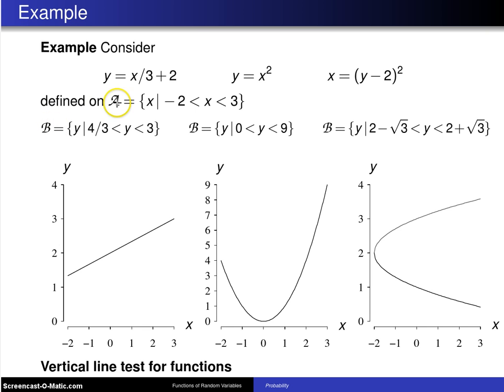The next thing to figure out is where does script A map to? And it maps to three different values for each of the different relations. First of all, y equals x over 3 plus 2. That maps from 4 thirds up to 3. So there is script B. In the case of y equals x squared, negative 2 to 3 maps from 0 to 9.